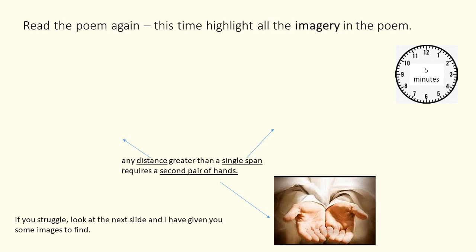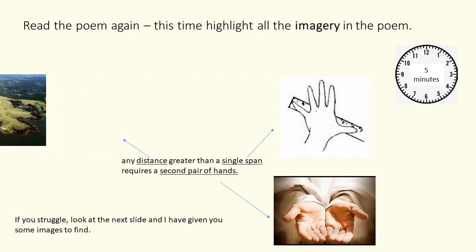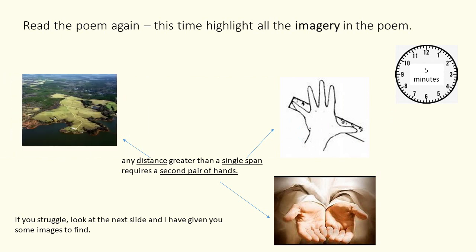Read the poem again. This time highlight all the imagery in the poem. For example, 'any distance greater than a single span requires a second pair of hands' — you've got clear imagery here of the span of a hand. If you're really struggling, look at the next slide and I've given you some more images to find. If you think you're okay, don't look at the next slide.